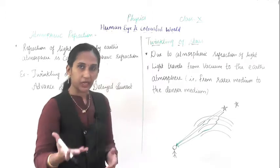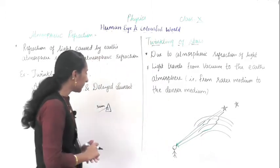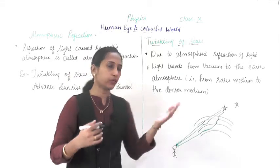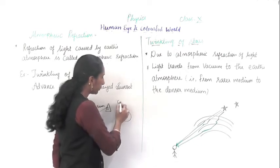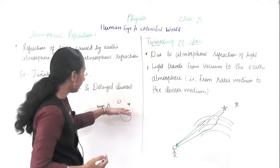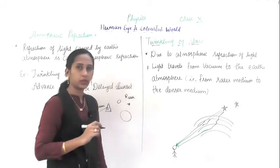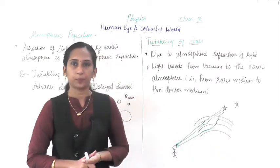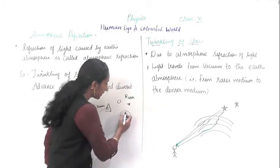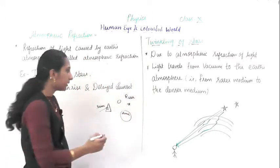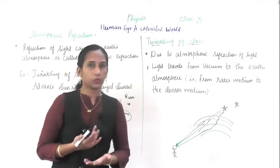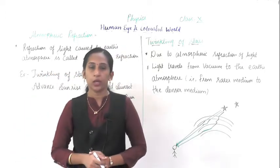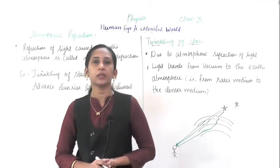The same concept applies to our atmosphere. As you know, all stars, sun, and moon are in vacuum - they are outside our earth. In vacuum the condition is a rarer condition, and when light enters into our earth's surface, there is atmosphere which makes it a denser medium. So when light comes from stars or moon, it enters from a rarer medium to a denser medium, and there is a bending of light - a refraction - because of the atmosphere. That is why it is called atmospheric refraction.